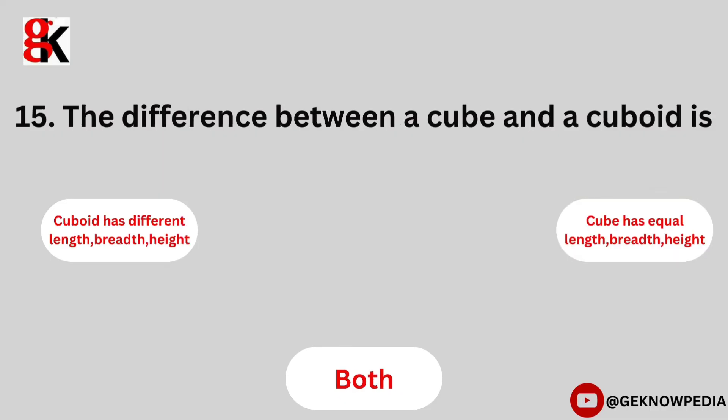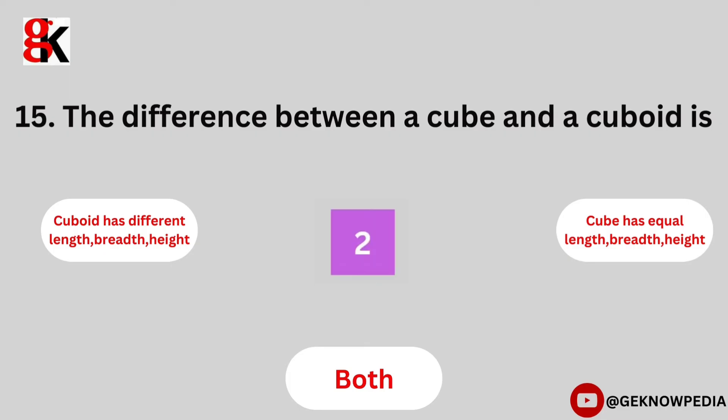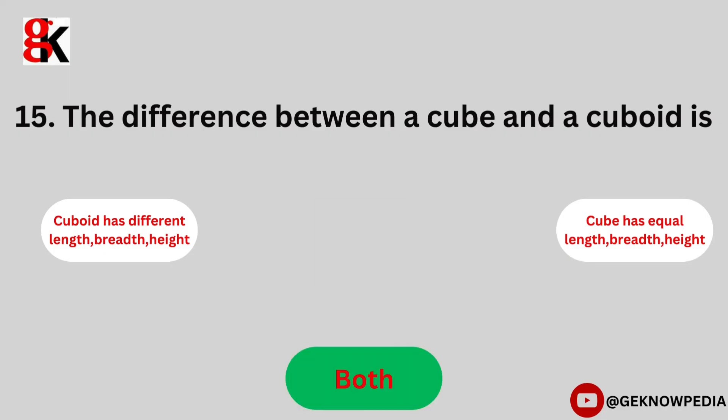Fifteenth question. The difference between a cube and a cuboid is: Cuboid has different length, breadth, height. Cube has equal length, breadth, height. Both. The correct answer is both.